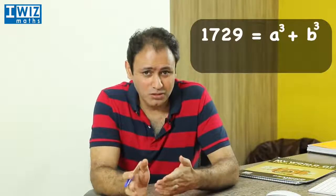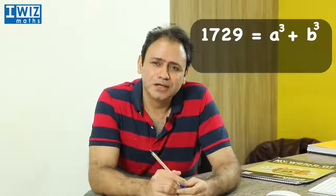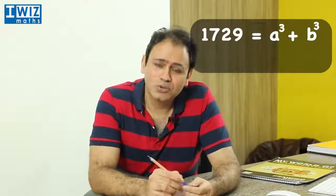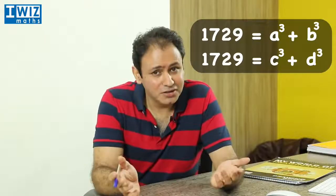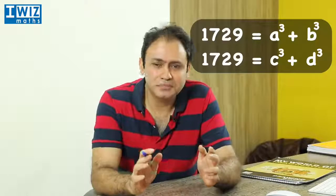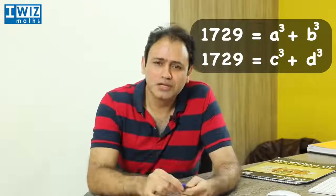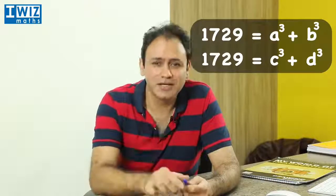Let's explain what that means. What that essentially means is that 1729 can be written as, say, a cubed plus b cubed, where a and b are numbers. But it can also be written as c cubed plus d cubed, where c and d are different numbers. So essentially, it can be written as the sum of two cubes in two different ways.